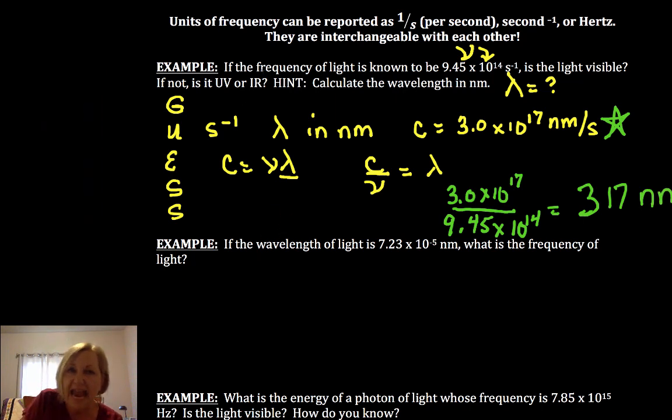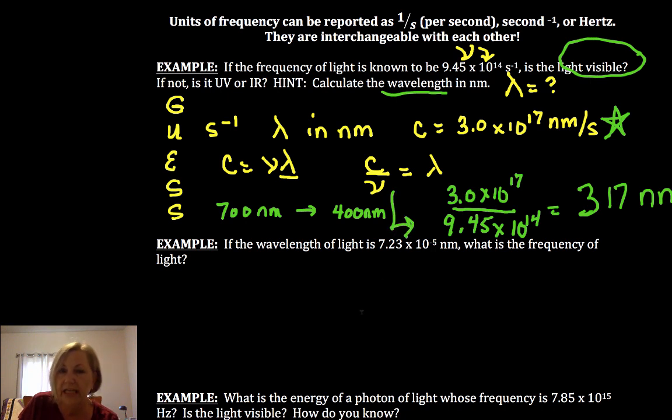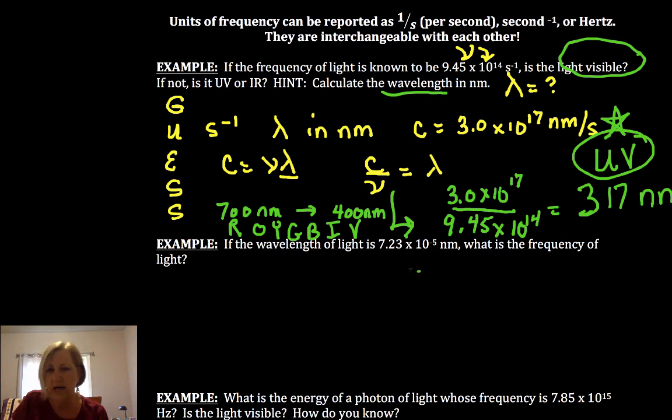Now the question asked is light visible and gave us a hint to calculate the wavelength. Well, visible light goes from 700 nanometers to 400 nanometers. Since my 317 is above 400, I know I'm not in the visible range. So if this is ROYGBIV, 400 being the violet, I am above the violet or in the ultraviolet range. Hopefully using some of those thought processes will spur your memorization a little bit.